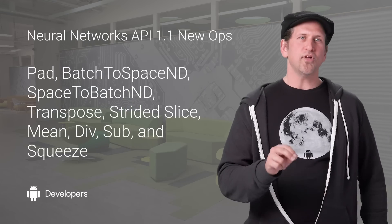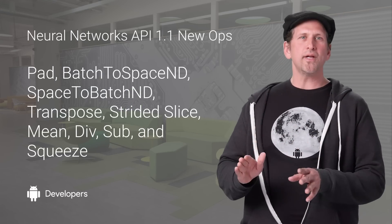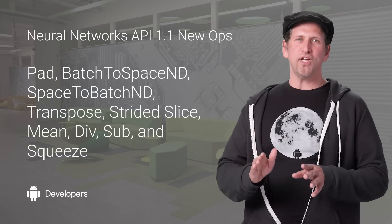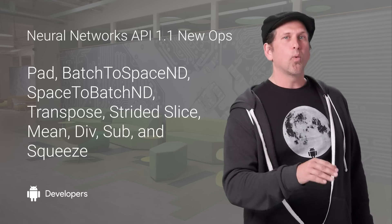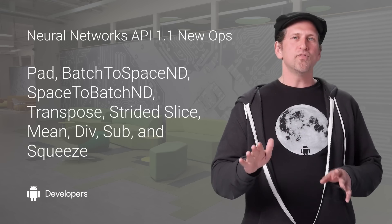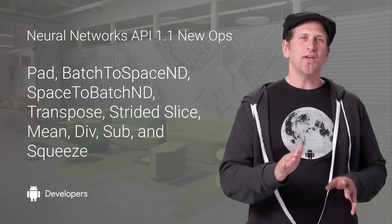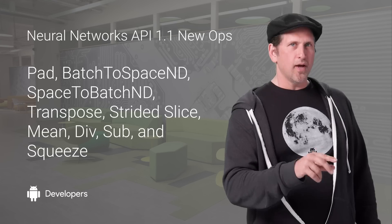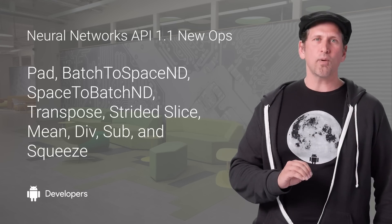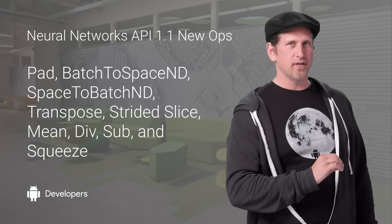The Neural Networks API was introduced in Android 8.1 to provide support for accelerated on-device machine learning. In Android P, we're expanding and improving the API, adding support for nine new ops. On Pixel 2, the DP1 build includes an accelerated driver for quantized models.